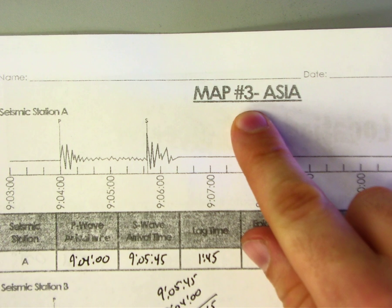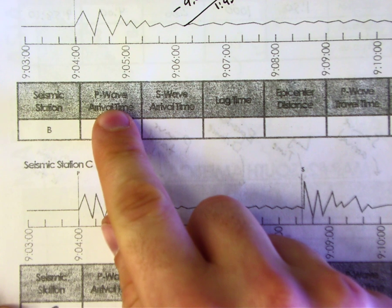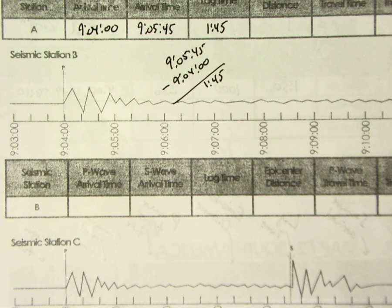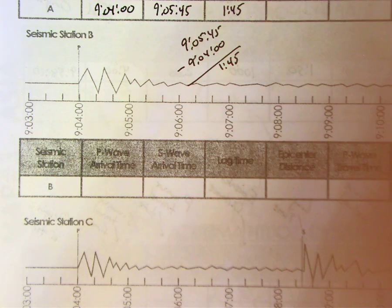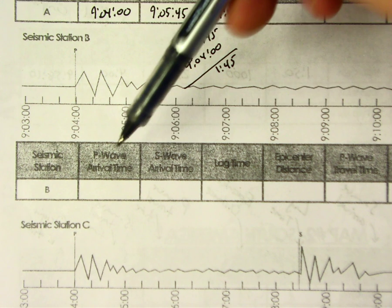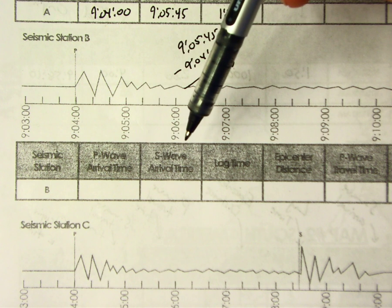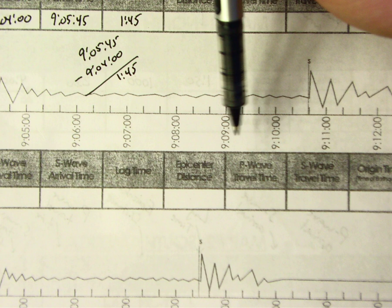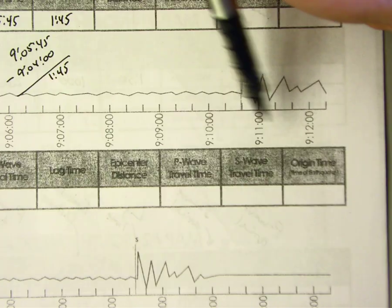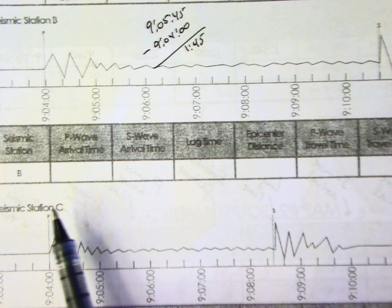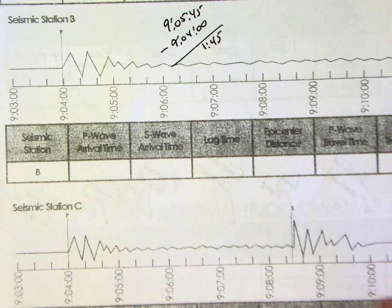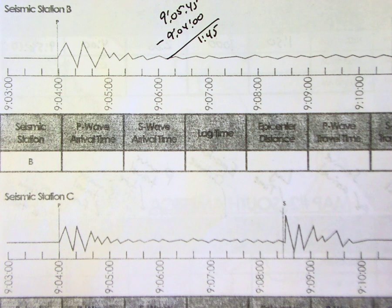If you can figure out the P wave arrival time and the S wave arrival time, you can figure out everything else. But if you get these two wrong, your entire answer will be wrong — so pay close attention, because it will be on your test. For the P wave arrival time, zoom in on the seismogram: the P wave is the first wave to arrive. If you trace it down, it's pretty close to 9:04:00.